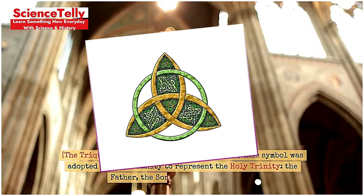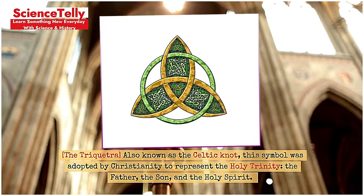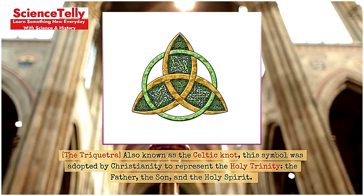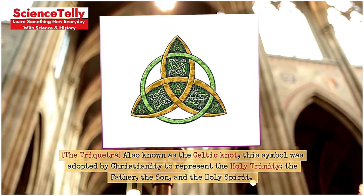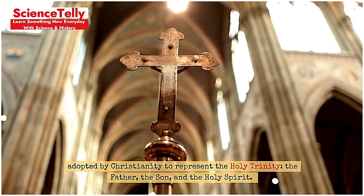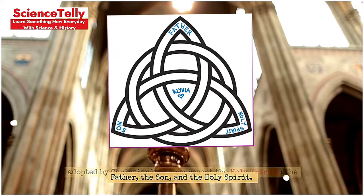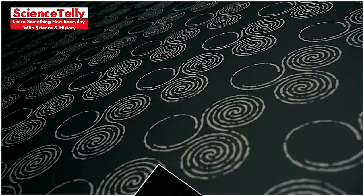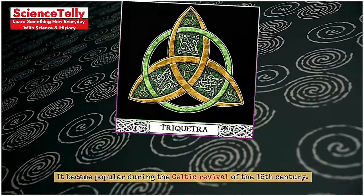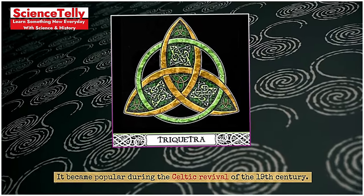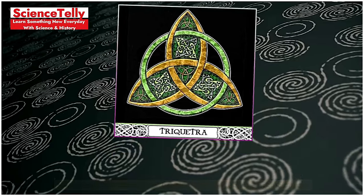The Triquetra, also known as the Celtic knot, was adopted by Christianity to represent the Holy Trinity — the Father, the Son, and the Holy Spirit. It became popular during the Celtic revival of the 19th century.